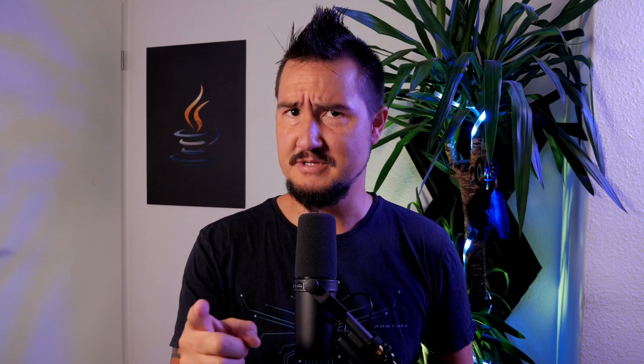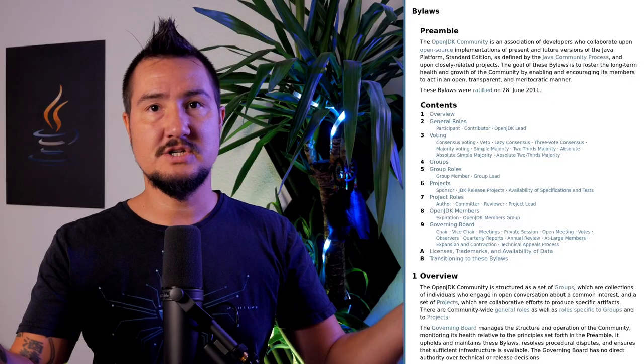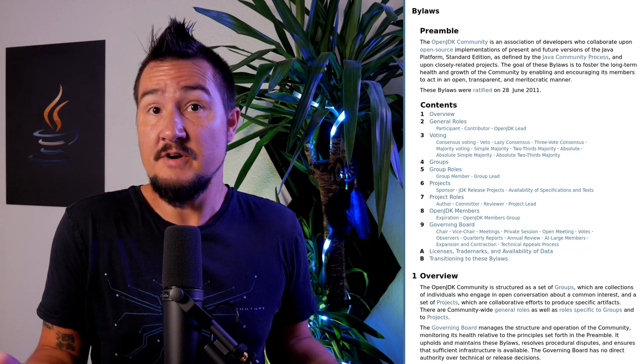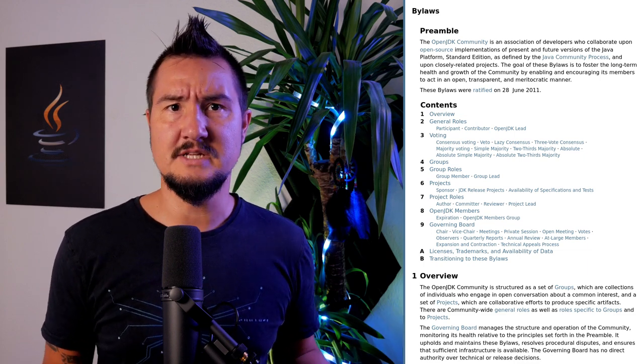Let's explore that a bit. OpenJDK is a community of individuals — so there are no companies. Oracle, Red Hat, Microsoft — they don't exist here. Well, there's one exception; I'll call it out when I get to it. So OpenJDK has to govern itself, and it does that according to its bylaws. They define the overall structure and process, roles, voting mechanisms, stuff like that. It's not very long — about 4,500 words, so about 20 minutes to read out loud.